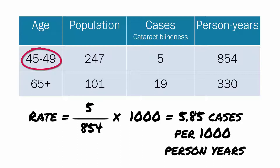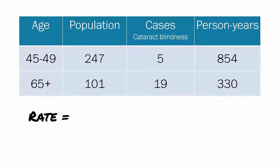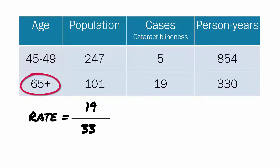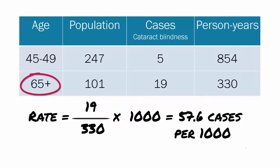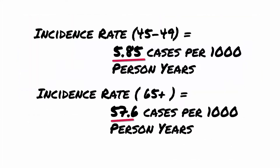Now for the older age group — those aged 65 and over. Among the 101 people, there were 19 new cases with 330 person-years of follow-up. We divide 19 by 330 and multiply by 1,000, giving an incidence rate of 57.6 cases per 1,000 person-years. Comparing the two rates, we can see that the incidence rate of cataract blindness in the older group is 10 times that of the younger group.